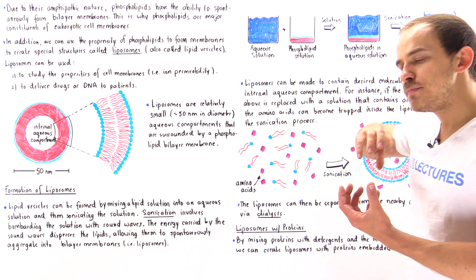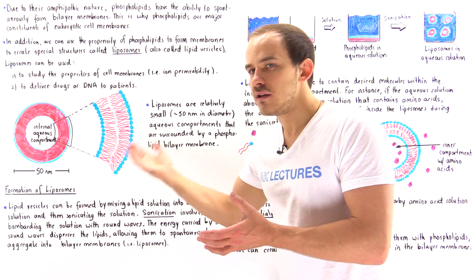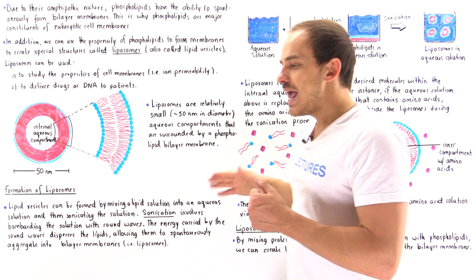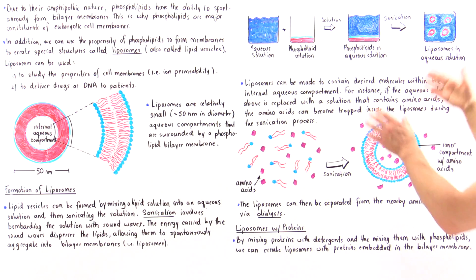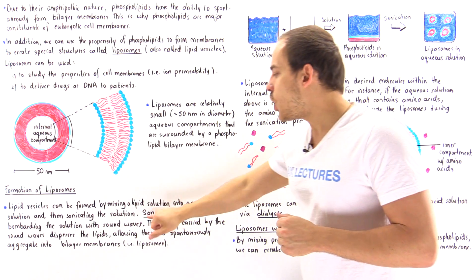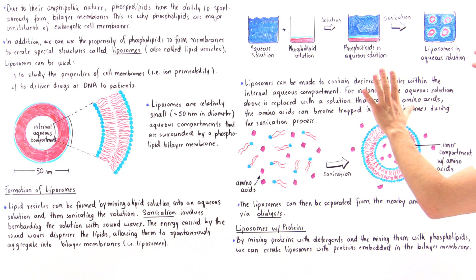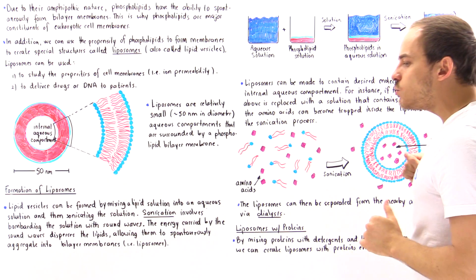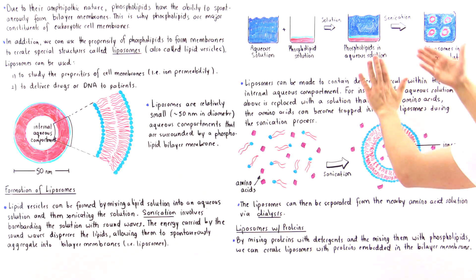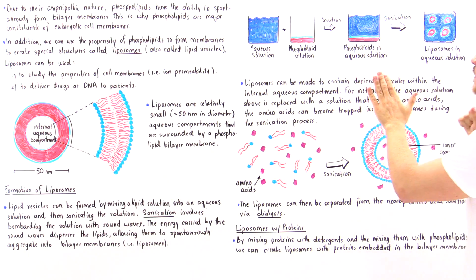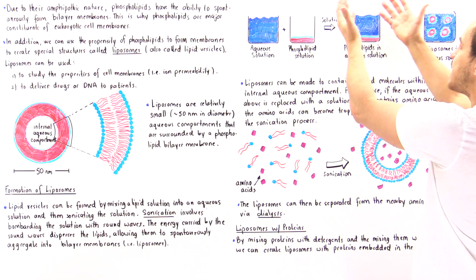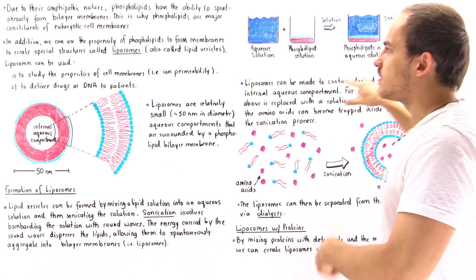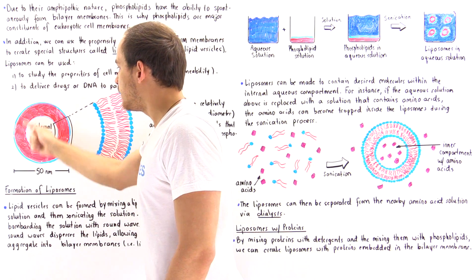To allow the phospholipids to spontaneously form vesicles — these liposomes — we have to disperse them within the aqueous solution. To do this, we undergo a process known as sonication. Sonication uses the energy stored in sound waves: we bombard our solution with sound waves, and the energy disperses and agitates the phospholipids, allowing them to move around and disperse within the aqueous solution.